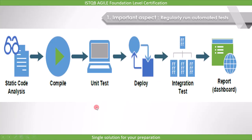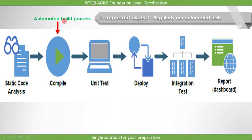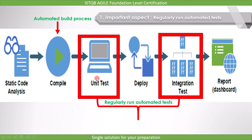One of the important aspects of continuous integration is that we have to regularly run automated tests. An automated build and test process takes place on a daily basis and detects integration errors early and quickly. Continuous integration allows agile testers to run automated tests regularly, in some cases as part of the continuous integration process itself, and send quick feedback to the team on the quality of the code. These test results are visible to all team members, especially when automated reports are integrated into the process.